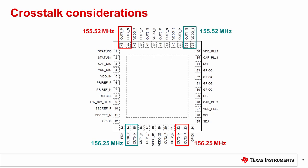Crosstalk can also be mitigated during board layout. If the signal traces are on the same layer, keep the physical distance to be at least three times the signal trace width. If the signal traces are on different layers, make sure that there is a solid ground region between the trace layers.